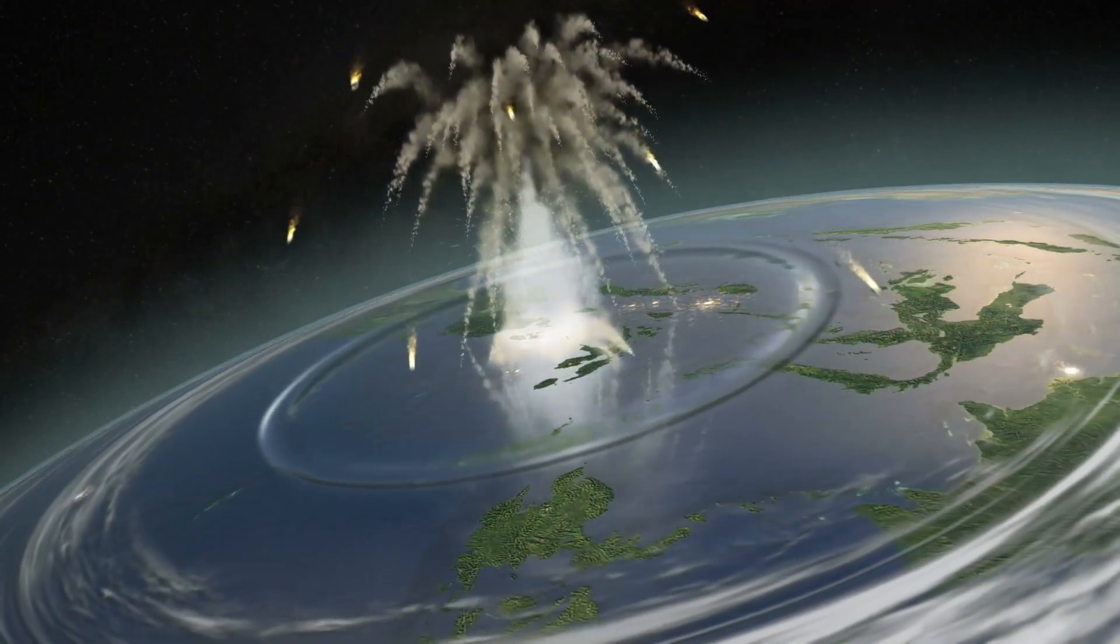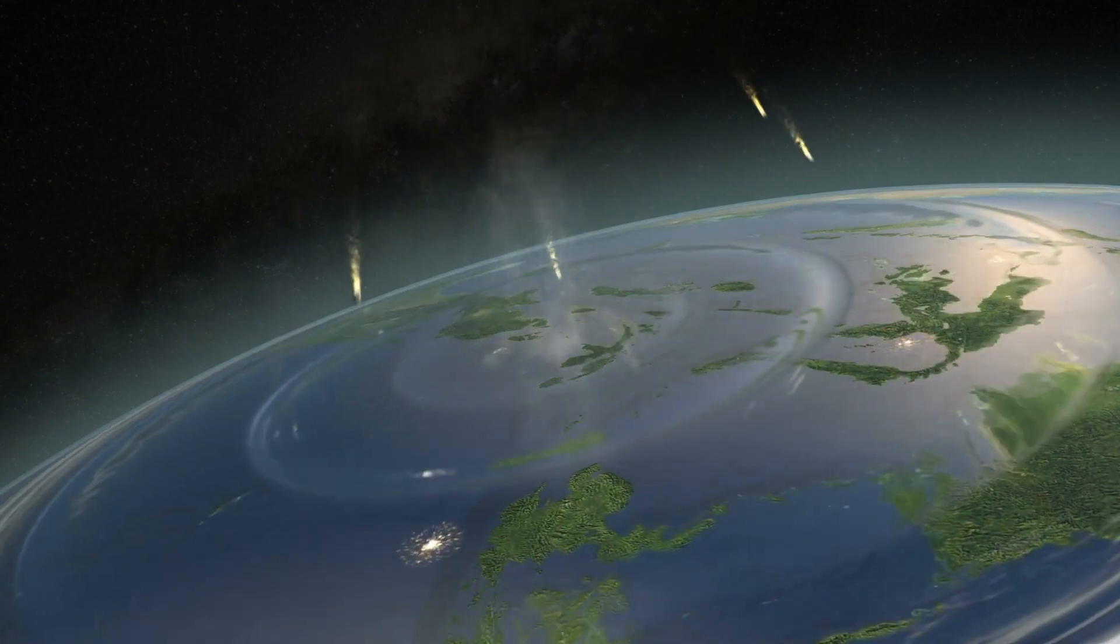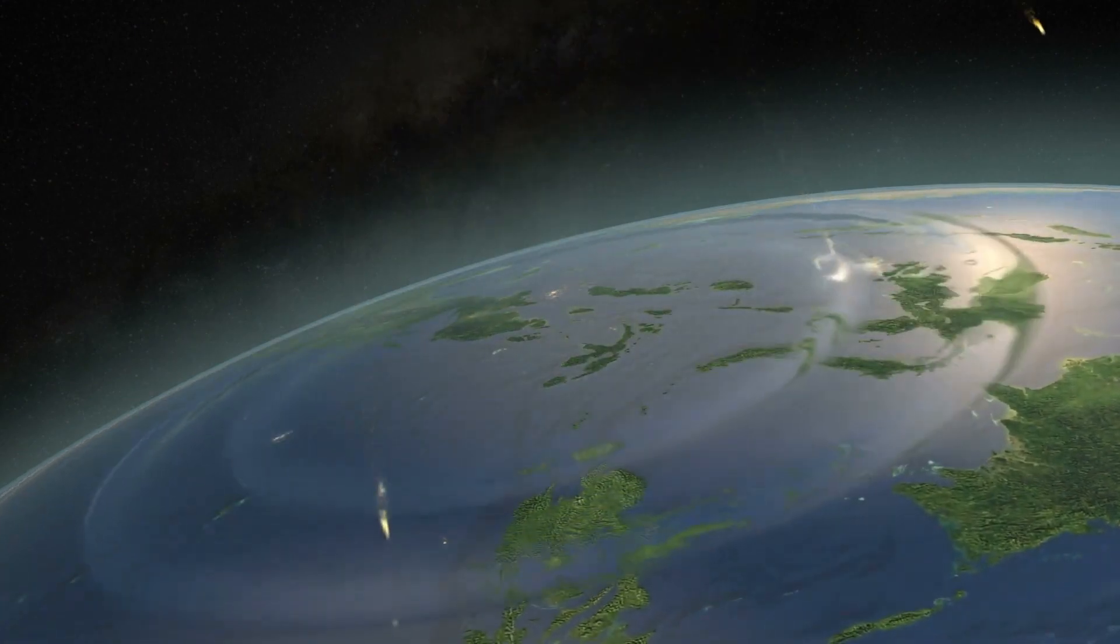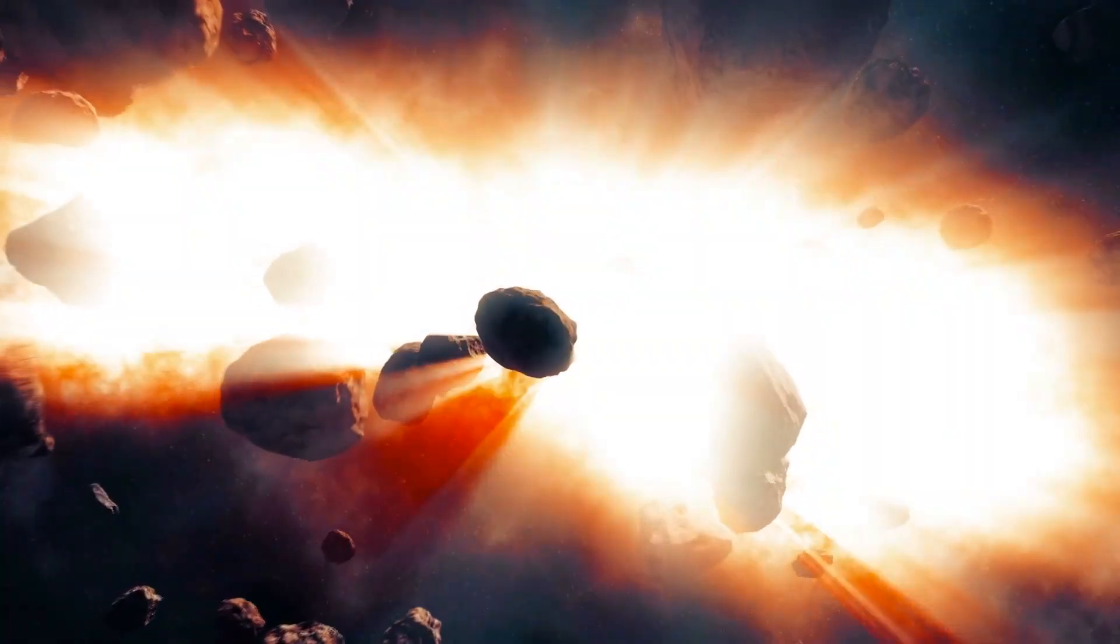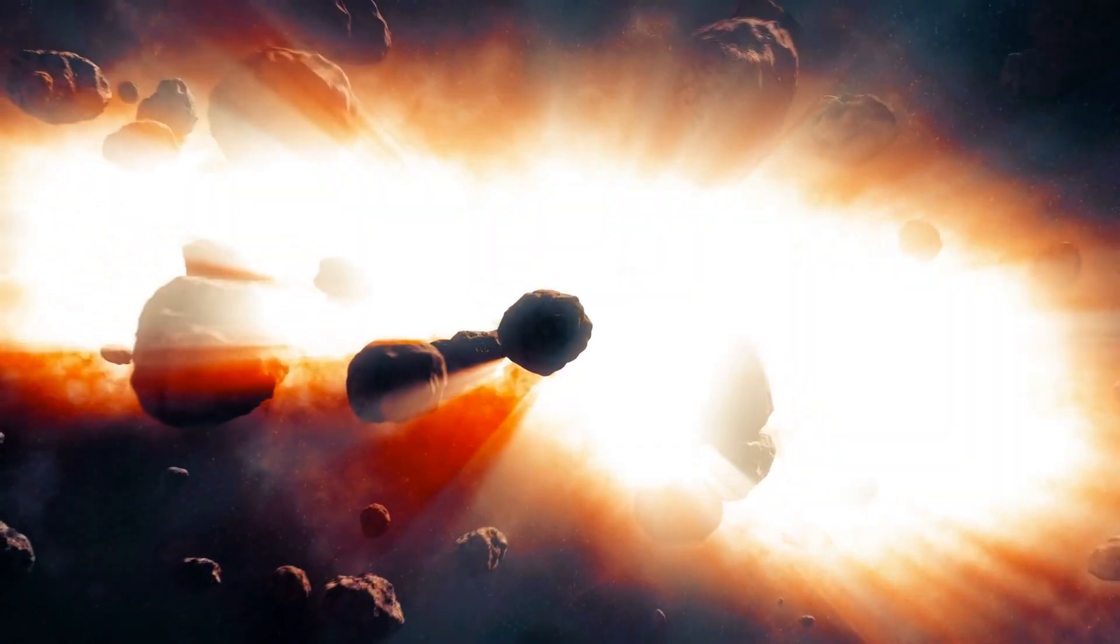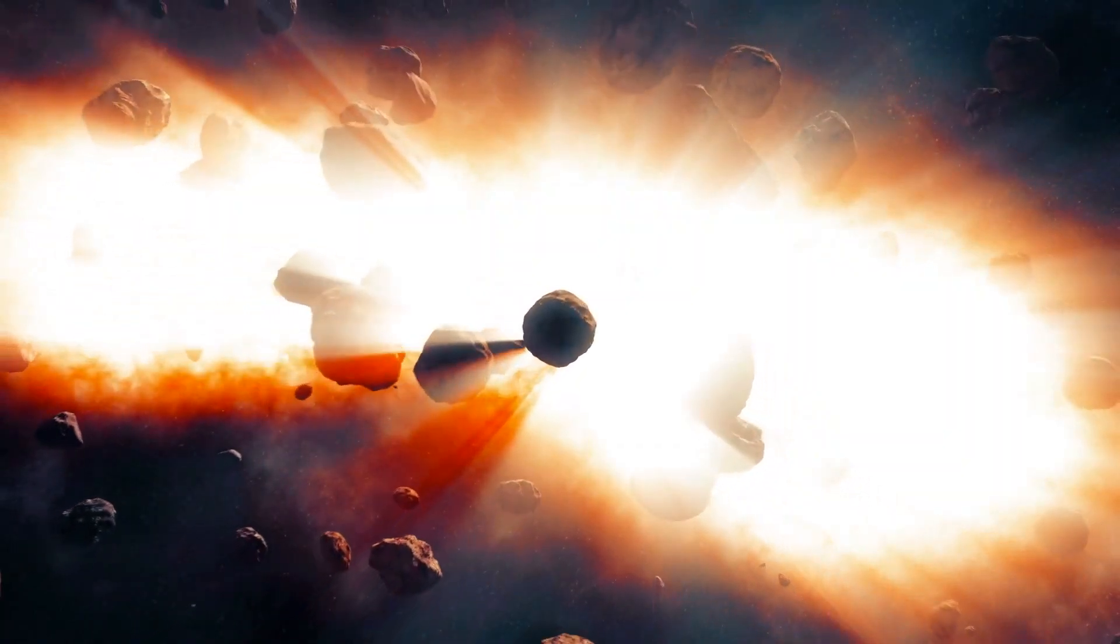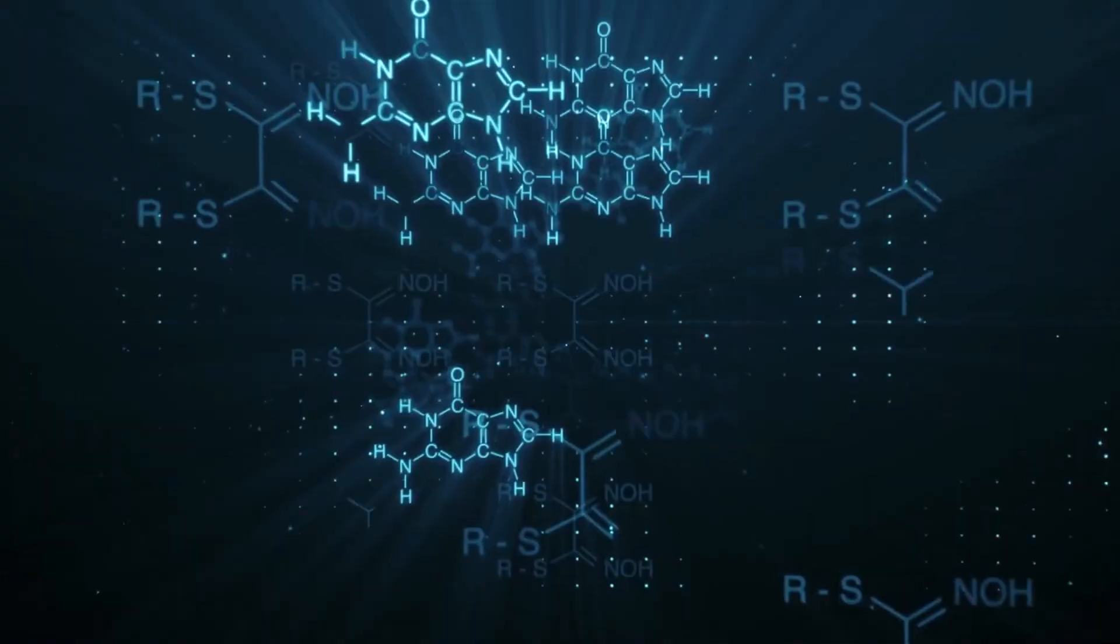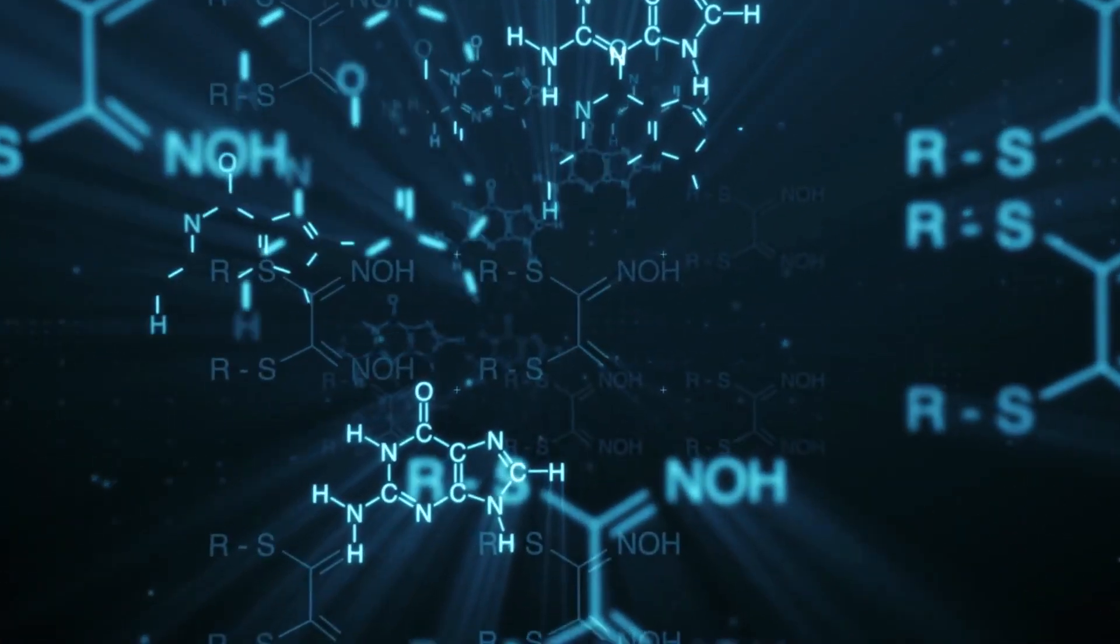The proposed explanation is that Theia, the hypothetical planet believed to have collided with Earth 4.5 billion years ago and caused the formation of the Moon, may have originated in the outer solar system rather than the inner solar system, and thus carried water and carbon-based materials with it.